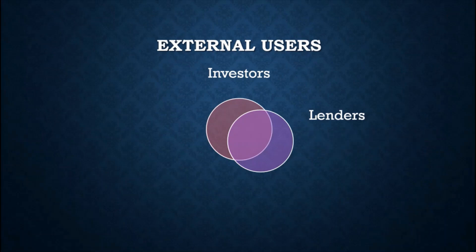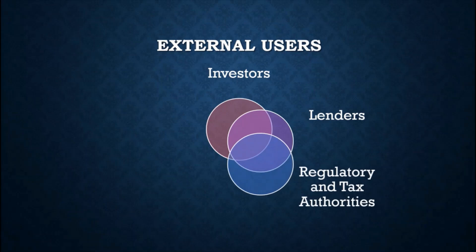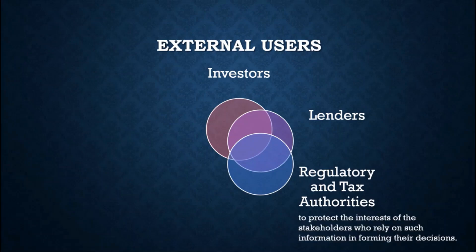Next are regulatory and tax authorities such as the SEC, BIR, DOLE, SSS, and LGU. They use financial information for determining the credibility of the tax returns filed on behalf of a company, and to ensure that the company's disclosure of accounting information is in accordance with the rules and regulations set in order to protect the interest of stakeholders who rely on such information in forming their decisions.